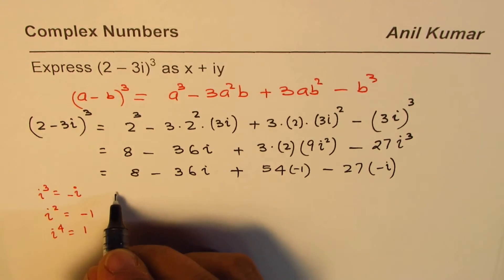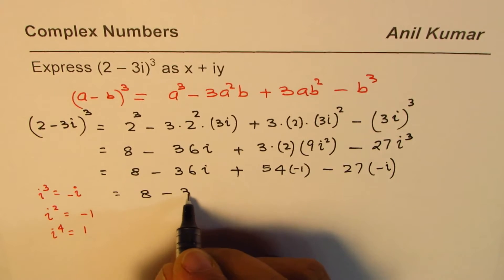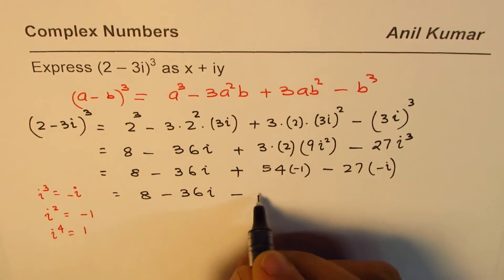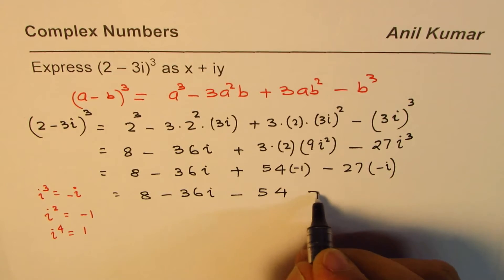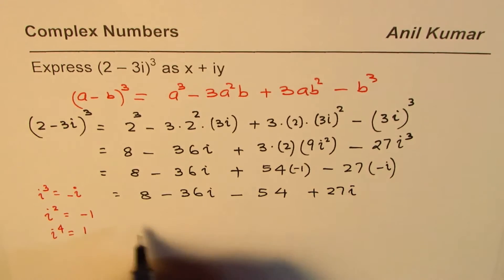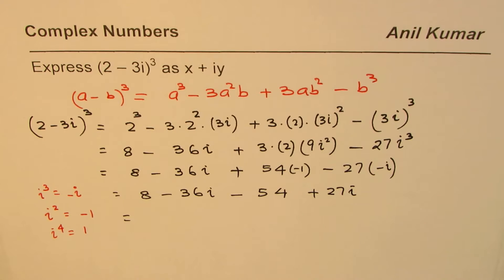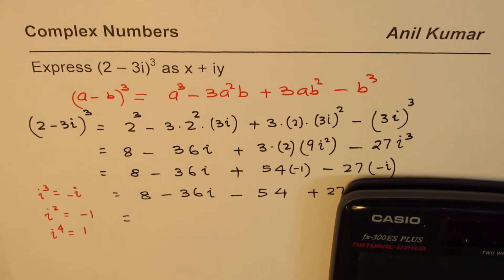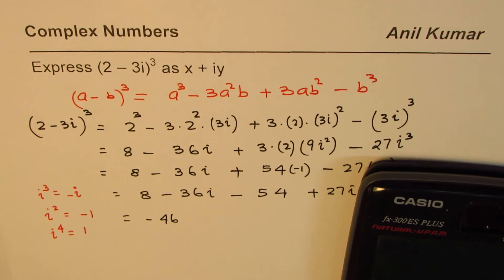So we have 8 - 36i - 54 + 27i. Now we can combine the real part which is 8 - 54, which is -46, and the complex part which is 27 - 36.